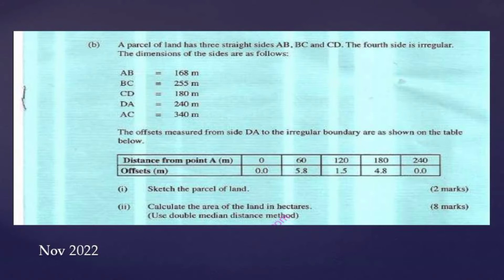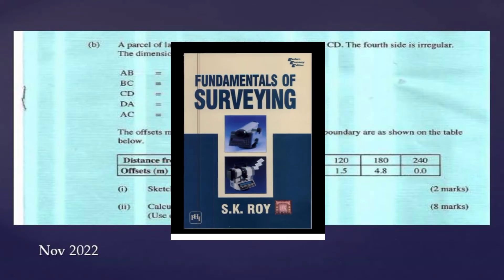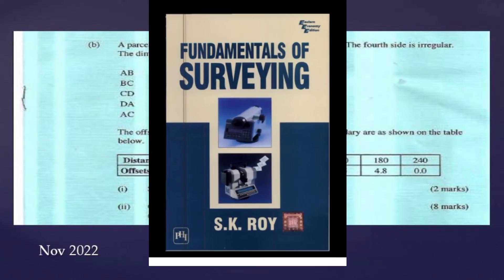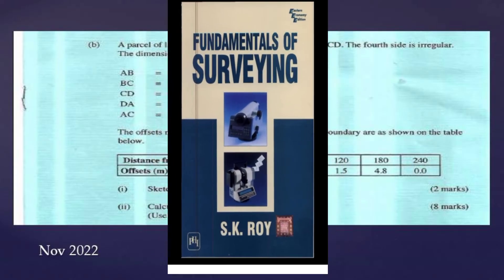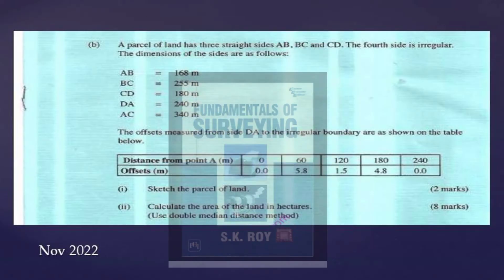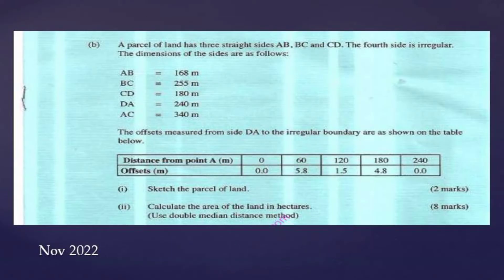So that double meridian distance method, you can refer to a good book I found in the library. So that book title is Fundamentals of Surveying by SK Rowing. If you look at page 412, they have explained well that method. You can look at that.